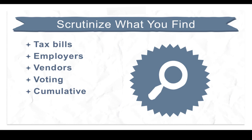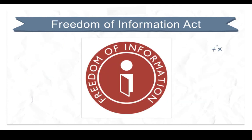Opposition research can happen online through the invisible or deep web, and even through private investigators or professional opposition researchers — there's a whole industry of people who dig up this kind of information. The Freedom of Information Act, or FOIA, is a law that allows for the full or partial disclosure of previously unreleased information and documents controlled by the United States government. FOIA presumes that the government will disclose information — the government must substantiate why information would not be released. Upon written request, agencies of the U.S. government are required to disclose records unless they can be lawfully withheld under one of nine specific exemptions. Many states have similar open records request acts.